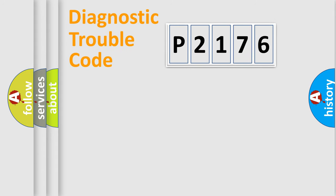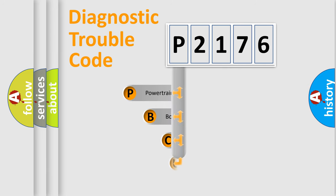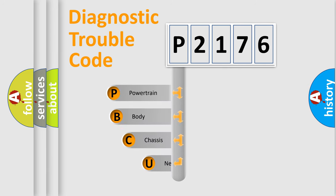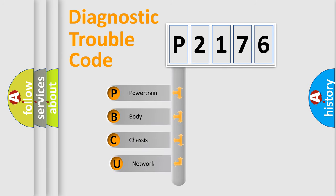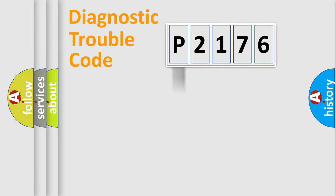Let's do this. First, let's look at the history of diagnostic fault code composition according to the OBD2 protocol, which is unified for all automakers since 2000. We divide the electric system of an automobile into four basic units: Powertrain, Body, Chassis, and Network.